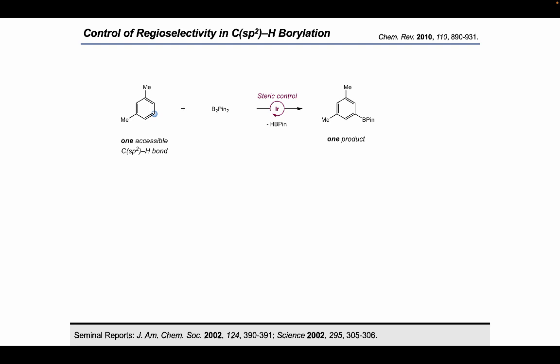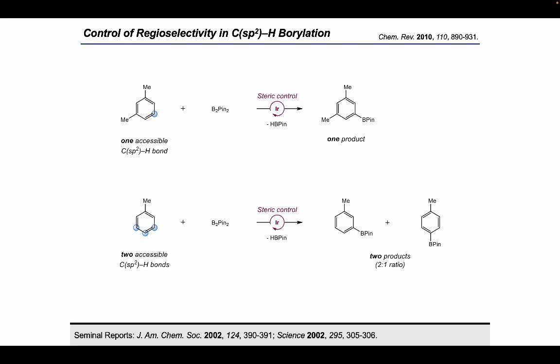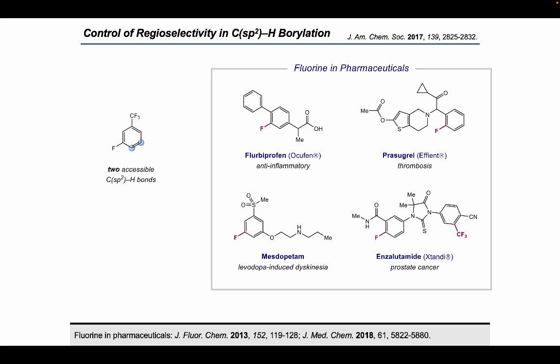Because regioselectivity is paramount in C-H functionalization, I want to discuss how the established iridium catalysts discriminate between arene C-H bonds. A general trend is that the barrier to C-H functionalization is really high for C-H bonds ortho to most functional groups due to sterics. For example, borylation of meta-xylene exclusively gives the 1,3,5-trisubstituted product because all positions ortho to methyl groups are blocked. Problems start to arise when multiple different types of C-H bonds are present. In the case of toluene, the ortho C-H bonds are blocked, but the meta and para C-H bonds are functionalized indiscriminately to give a statistical mixture of the arylboronate products.